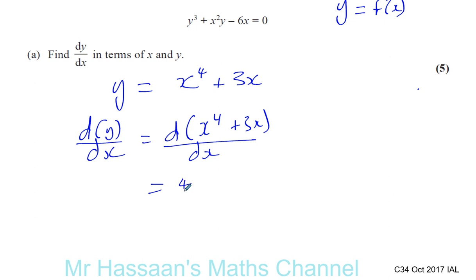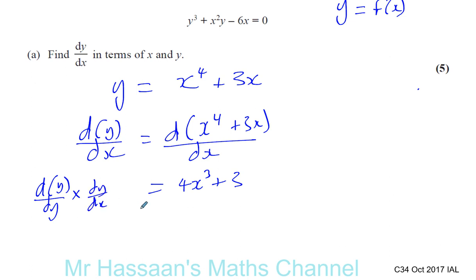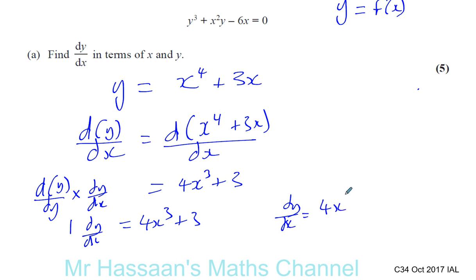On the right side we know how to differentiate: it becomes 4x cubed plus 3. On the left side, when you differentiate y with respect to x, you differentiate y with respect to y first — which gives you 1 — and multiply that by dy/dx. Think of the dy's as cancelling out, giving you dy/dx. So differentiating y with respect to y gives 1, times dy/dx equals 4x cubed plus 3, and that's how you get dy/dx equals 4x cubed plus 3.